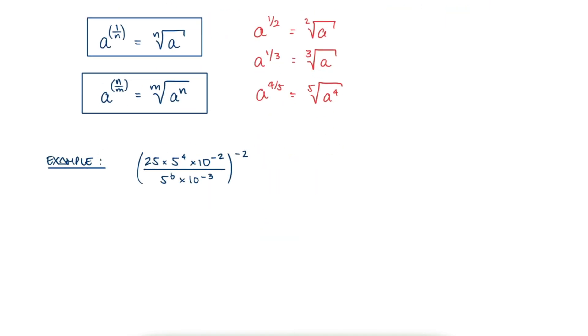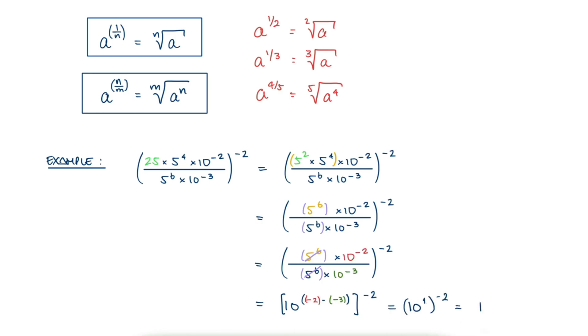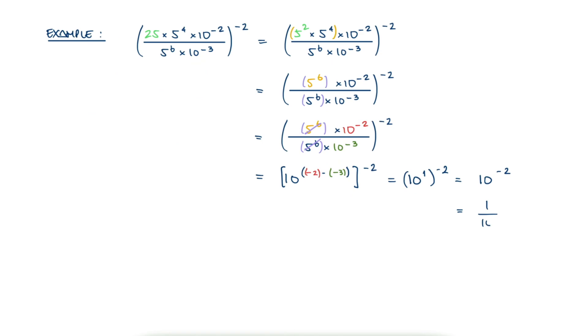if we have an expression like this, we can write 25 as 5 squared, merge it with the 5 to the 4, cancel it with the 5 to the 6, use the quotient rule for the tens which end up being a 10, and use the negative exponent rule on it by taking its reciprocal and evaluating the 10 to the 2.